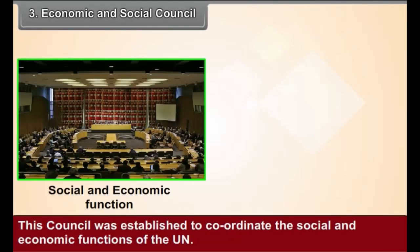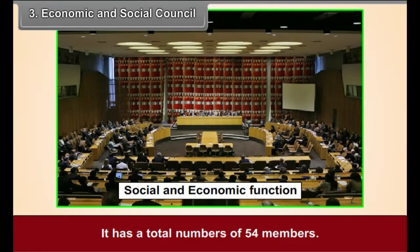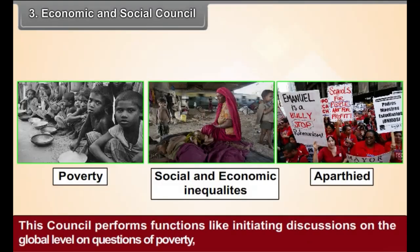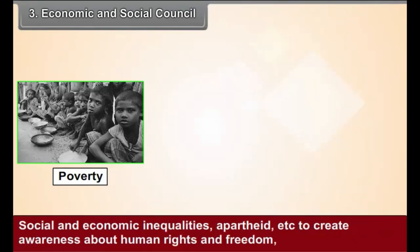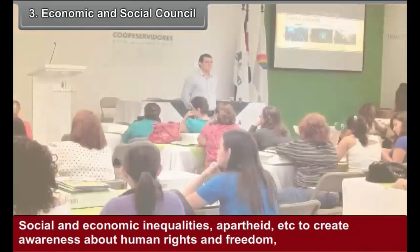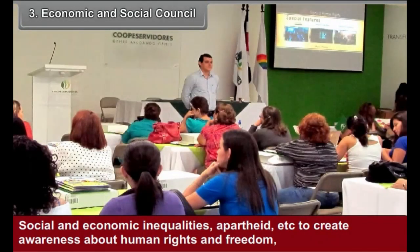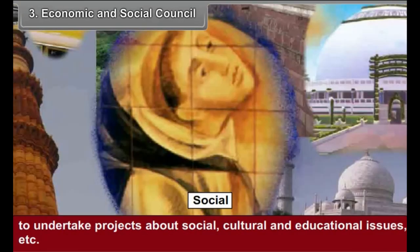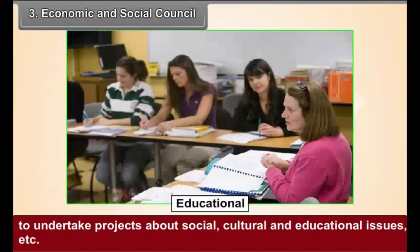Economic and Social Council — Structure: This Council was established to coordinate the social and economic functions of the UN. It has a total number of 54 members. Functions: This Council performs functions like initiating discussions on the global level on questions of poverty, social and economic inequalities, apartheid, etc. It also works to create awareness about human rights and freedom and to undertake projects about social, cultural, and educational issues.